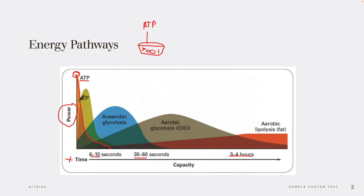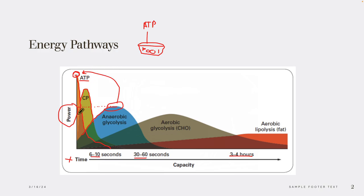When we have a decrease in ATP, another energy system turns on. As that starts to plummet, you'll see this blue energy system start to turn on and take over. The amount of power that blue energy system puts out is very different — about half of what we saw with the first system. So we transition into different energy systems, and you can see here we have one, two, three, four, five energy systems.